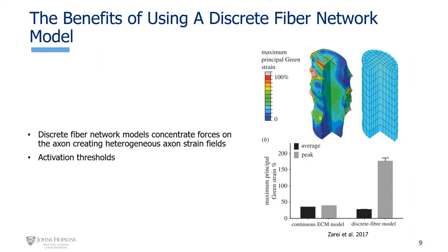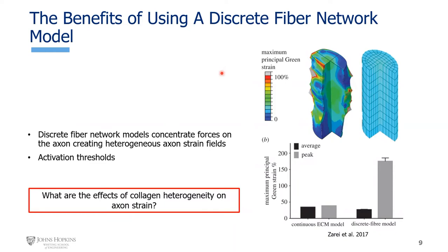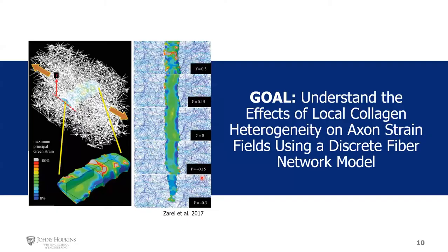For my particular study, I used this discrete fiber network approach to answer the question of collagen heterogeneity: what if the network surrounding the axon isn't one uniform density or alignment? What if there are two different density types? The goal was to understand the effects of local collagen heterogeneity on axon strain fields using a discrete fiber network model.